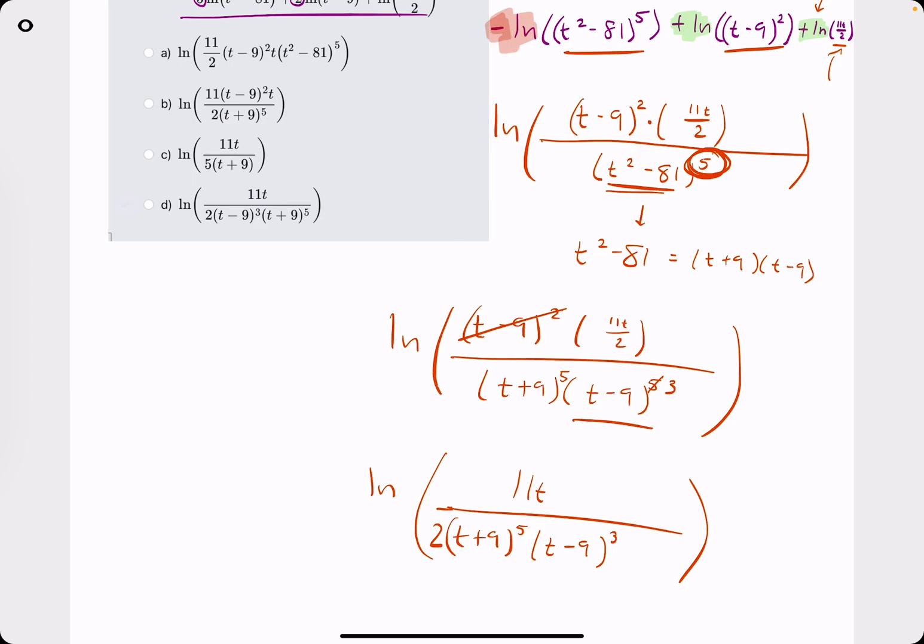So they're going to have 11t on top and then the actual 2 on the bottom. So let's see if we can find that anywhere. 11t on top, 2 on the bottom, (t - 9)³ on the bottom, (t + 9)^5 on the bottom, leaves us with option D.